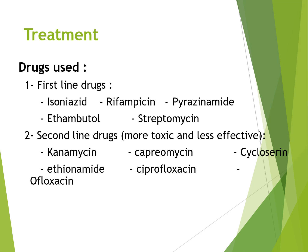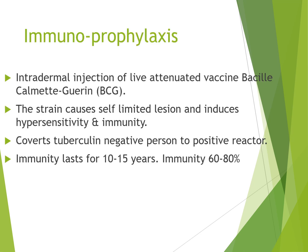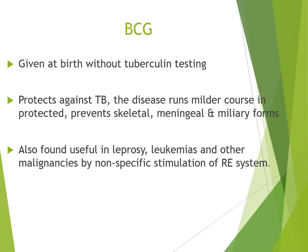Looking at immunoprophylaxis, this involves intradermal injection of a live attenuated vaccine — BCG (Bacillus Calmette-Guérin). The strain itself causes a limited lesion and induces hypersensitivity immunity, converting tuberculin-negative people to positive reactors. Immunity lasts for 10 to 15 years and is 60 to 80% effective. The BCG vaccine is given after tuberculin testing, protects against tuberculosis disease, and prevents lethal meningeal and miliary forms. It was also found useful in leprosy, leukaemias, and other maladies by non-specific stimulation of the reticuloendothelial system.